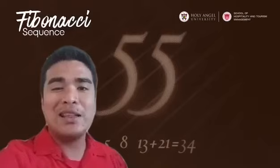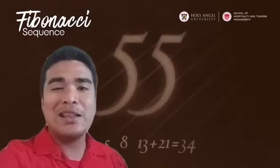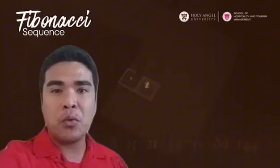So what is the Fibonacci sequence? It is a set of integers that starts with a 0, followed by 1, then by another 1, and then a series of steadily increasing numbers.